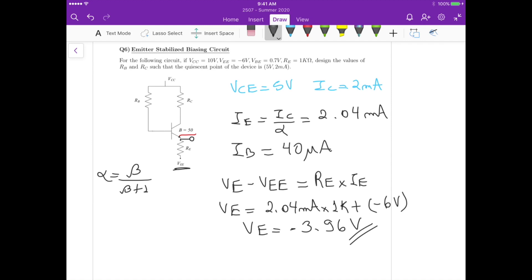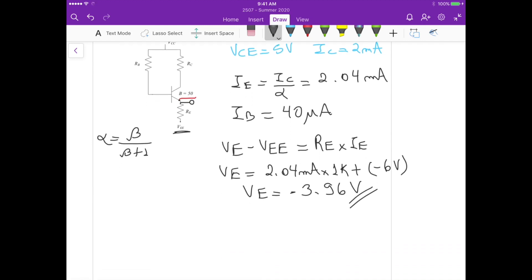And we also know that VBE, so VB minus VE, is equals to 0.7 volts. We know VE here, we can calculate VB, so VB is equals to 0.7 plus VE, which gives us minus 3.26 volts.